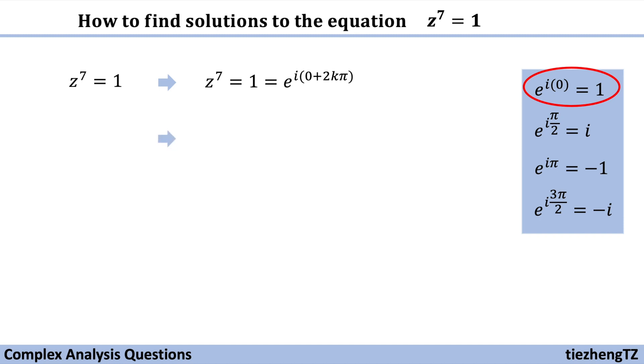So on both sides we just multiply 1 over 7 in the power so we can figure out z value. So z equals e to the power i times 2k pi over 7.